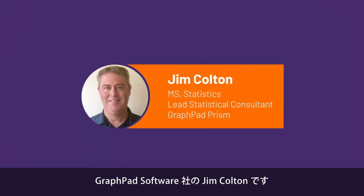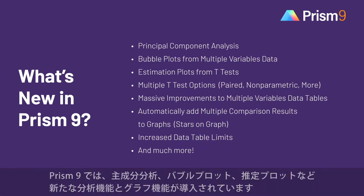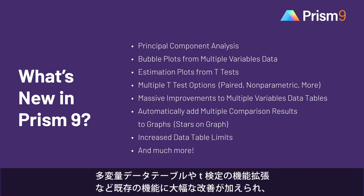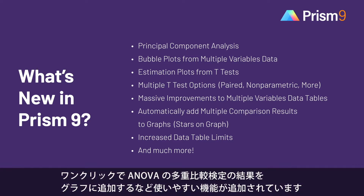This is Jim Colton from GraphPad. In this video, I will highlight the major new features of PRISM 9. PRISM 9 introduces a number of great improvements, including all new analyses and graphs, such as principal components analysis, bubble plots, and estimation plots, as well as major improvements to the performance of existing features, such as an expansion of the multiple variables data table and multiple t-tests, and important time-saving ease-of-use features, such as adding ANOVA multiple comparison results to graphs with a single click.